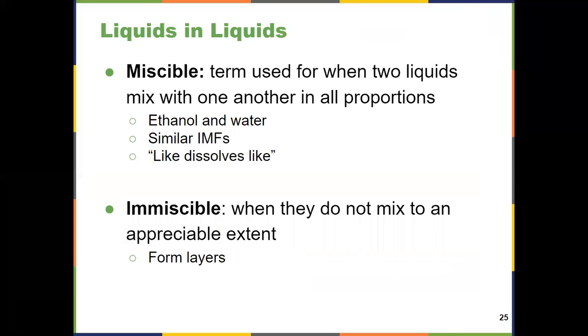How about liquids and liquids? Two new terms I want you to know here: miscible and immiscible. Because if we have two liquids coming together, we don't really think about it as a solute and a solvent. We think about them mixing together. Either they do or they don't. If they do, they're called miscible. Two liquids that mix together with one another in all proportions, and that only happens when they have the same type of IMFs. Like dissolves like is the key thing for solubility. Ethanol and water is an example of that. Ethanol has an OH on the end, water has an OH, they both hydrogen bond, they mix together.